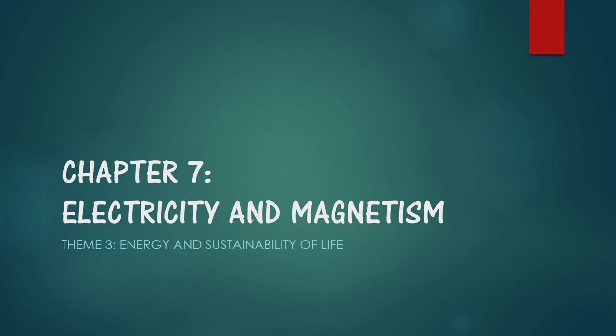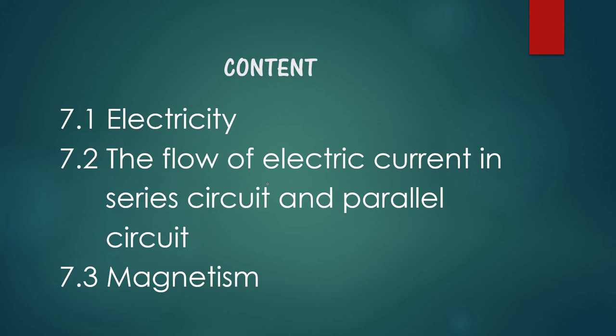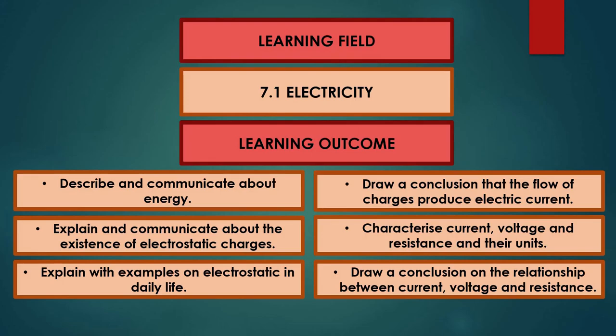Hello guys, welcome back to my YouTube channel. Today we are going to talk about the topic related to Chapter 7: Electricity and Magnetism. This topic is included in your textbook Theme 3: Energy and Sustainable Life. In this topic you are going to learn about three subtopics: electricity, how to calculate the flow of electric current in series circuit and parallel circuit, and also the concepts regarding magnetism.